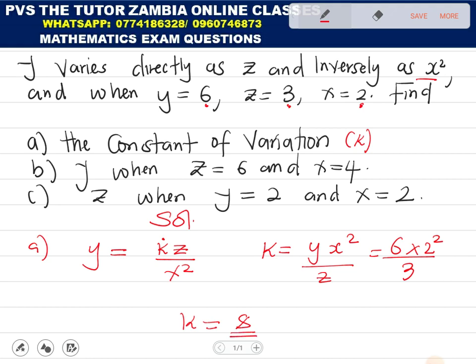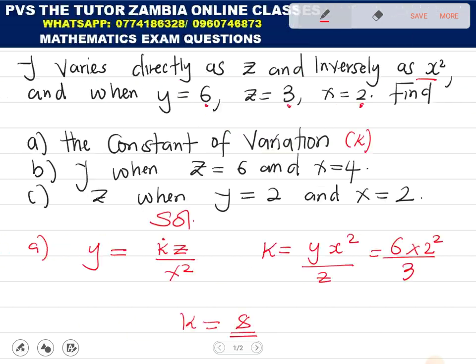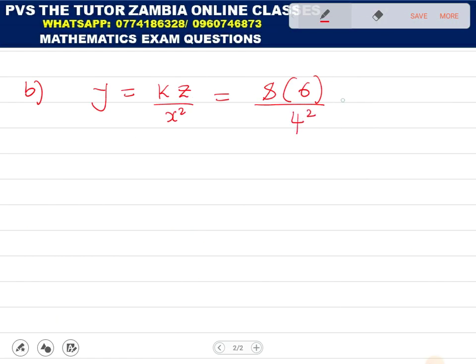Now that you've found the constant of variation, let's work out part B, which says to find y when z is 6 and x equals 4. We know that y equals kz over x squared, we now know that k is 8 and z is 6, and x is 4, so I'm going to put 4 squared. In this one, I'll get 48 over 16, which is 3. So y is 3.